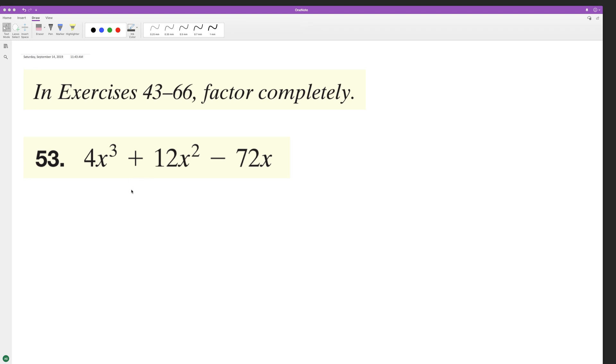So what we're going to do here is, first off, I can see that I can factor out a 4x, so we have 4x, and then we have x squared plus 3x minus, let's factor out this, so it's going to be 18.